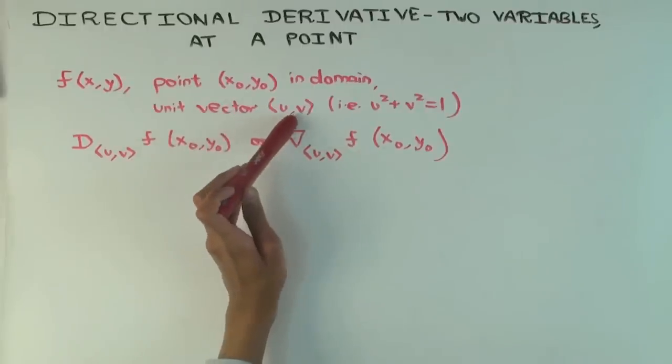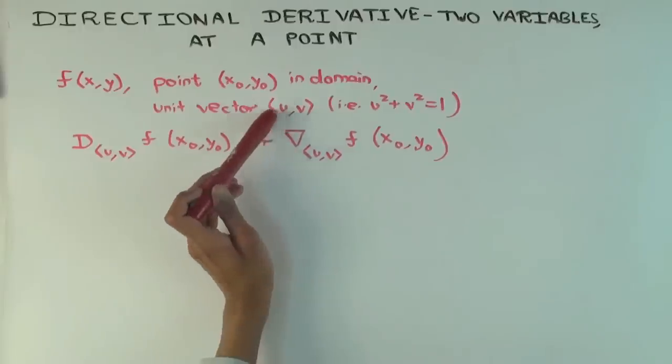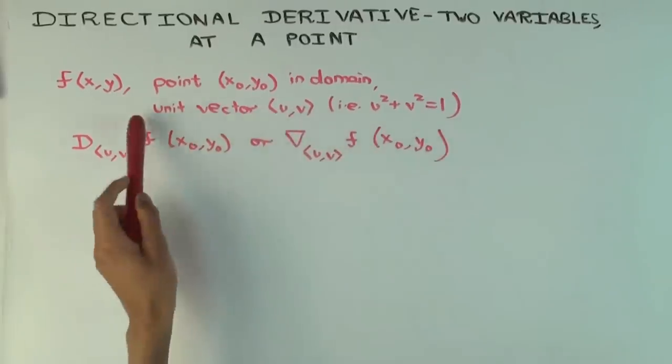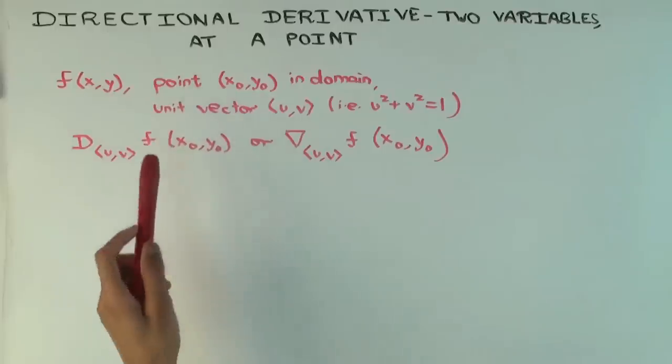And we have a unit vector uv. So what does this mean? It just means it's a pair of numbers and the sum of the squares is 1. That's where the word unit vector comes in.